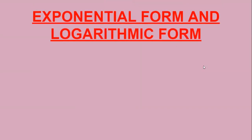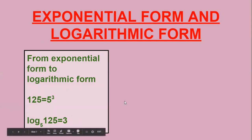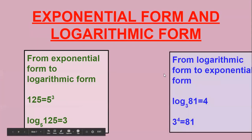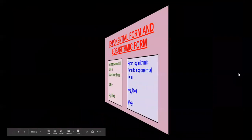Now we will work out some problems. Very important one-mark or two-mark questions: if given in exponential form, write in logarithmic form; if given in logarithmic form, write in exponential form. For example, here the base is 5 — log 125 to the base 5 is equal to 3. This is the logarithmic form and the corresponding exponential form is 5 cubed equals 125.